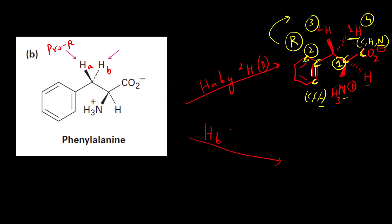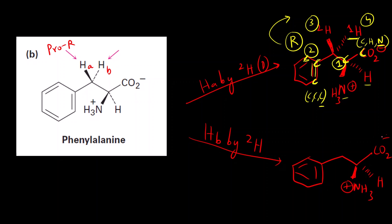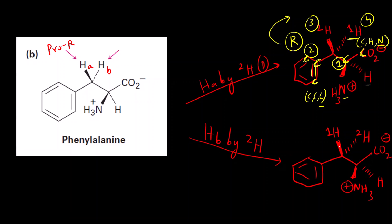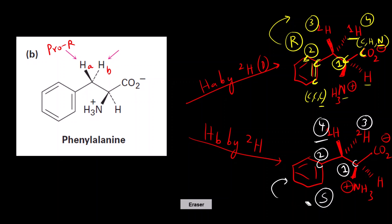Replacing HB by ²H: NH₃⁺ remains on the wedge bond, CO₂⁻ is present, ¹H is on the wedge bond, and ²H is on the dash bond. Assigning priority: nitrogen-bearing group is 1, CO₂⁻ carbon is 2, ²H is 3, ¹H is 4. Going 1, 2, 3 it is clockwise, so it should be R, but the fourth priority group is on the wedge bond, so we change R to S. Therefore HB is Pro S.